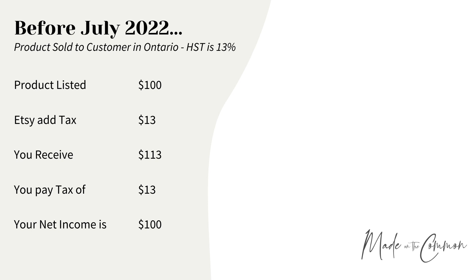So you could list your product at $100, and then Etsy, when it came to checkout, would charge your customer the $100 plus whatever tax was due. And you would get paid, for example, $113, so that you could split out the $13 and pay that over to the tax authorities, and you would still receive the $100 that you'd listed your product at.